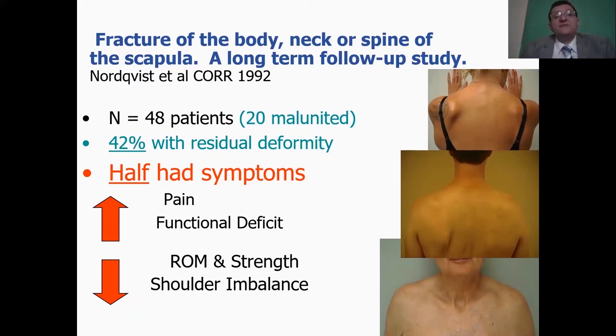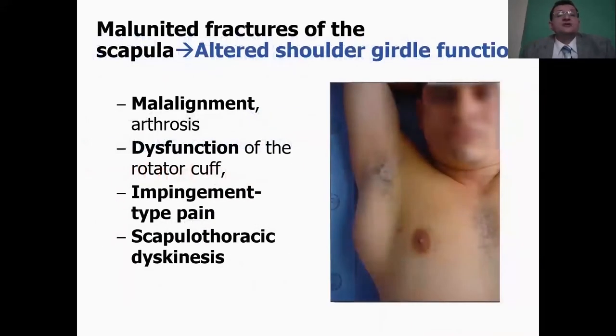As about 30 years ago, Nordqvist has published a paper about 48 patients, 20% of which developed a malunion of the scapula, and most of which had residual symptoms in the form of pain, functionally deficit decreased range of motion, and shoulder imbalance.